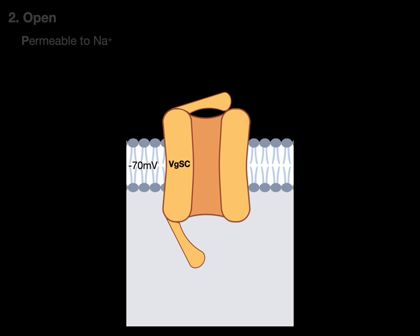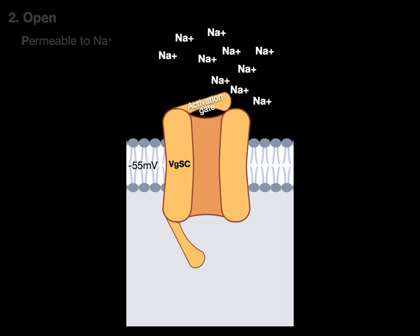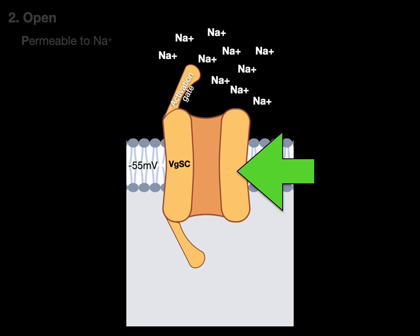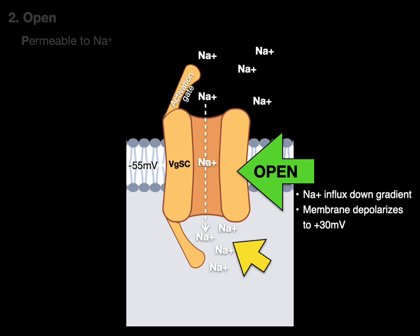The second conformational state is open, meaning the channel is now permeable to sodium. An approaching action potential makes the internal surface of the membrane less negative — say it goes to -55 millivolts — and the activation gate opens, making the VGSC open. Sodium flows in down its gradient and the membrane depolarizes toward +30 millivolts. Even just a few picomoles of sodium ions — more like a trickle than a waterfall — can depolarize that membrane to +30 millivolts.